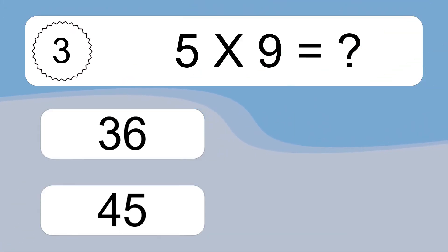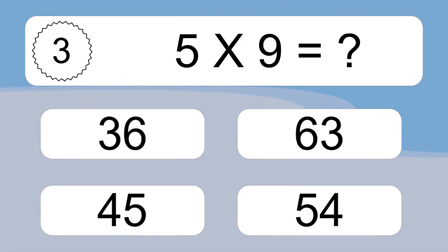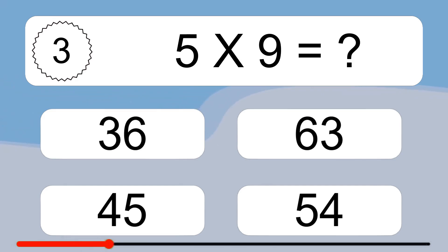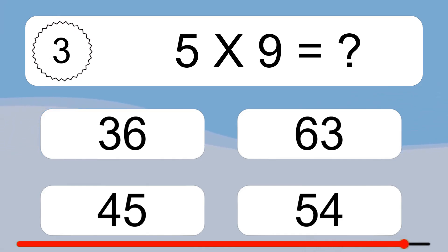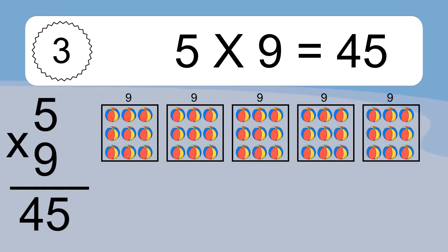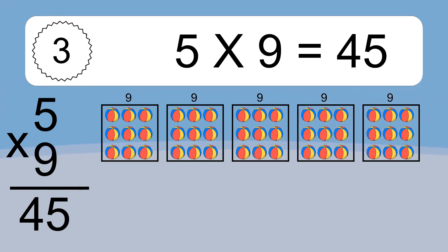5 times 9 equals what? 5 times 9 equals 45. We have 5 boxes, and each box has 9 colorful balls inside. If you count all the balls in all the boxes together, you will have 5 times 9 balls. This equals 45 balls.